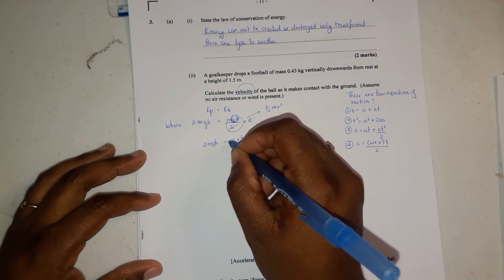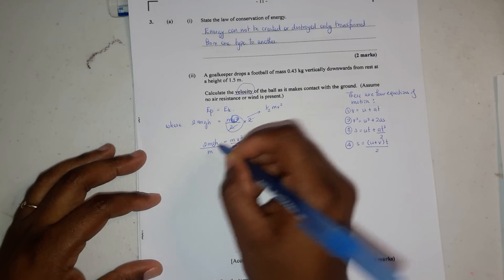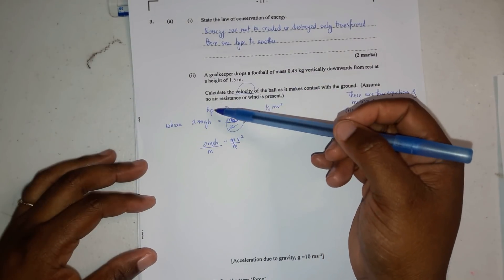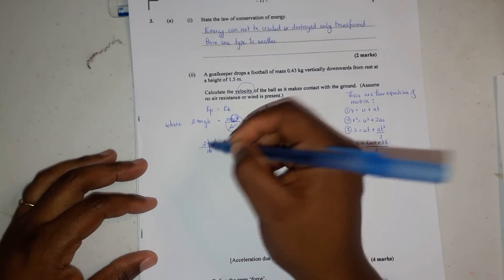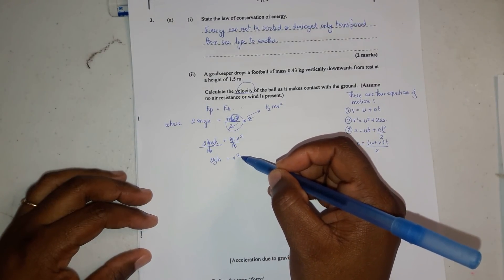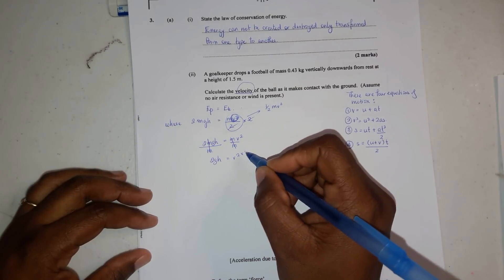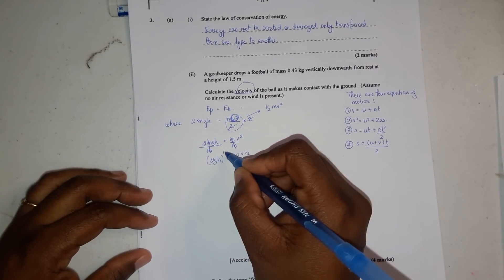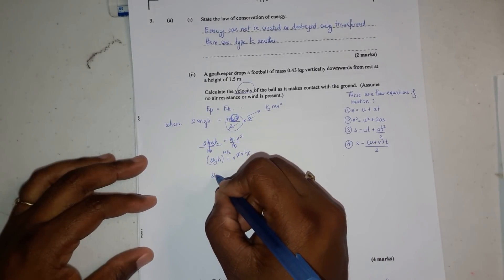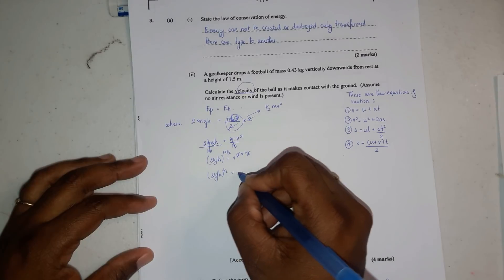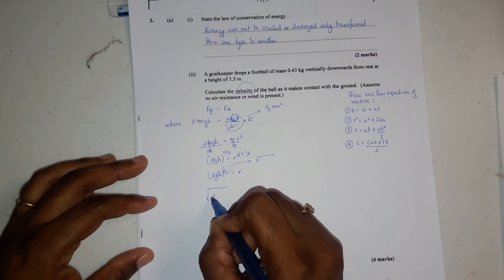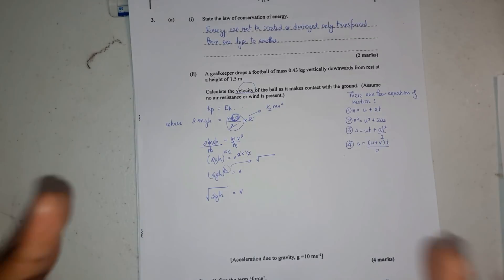So you end up with 2mgh equals mv squared. You still have a problem with v, so you divide by m. If you notice, m and m will be the same mass, so they cancel out. You're left with 2gh equal to v squared. To get rid of the square, multiply both exponents by a half. So the square root of 2gh equals v.